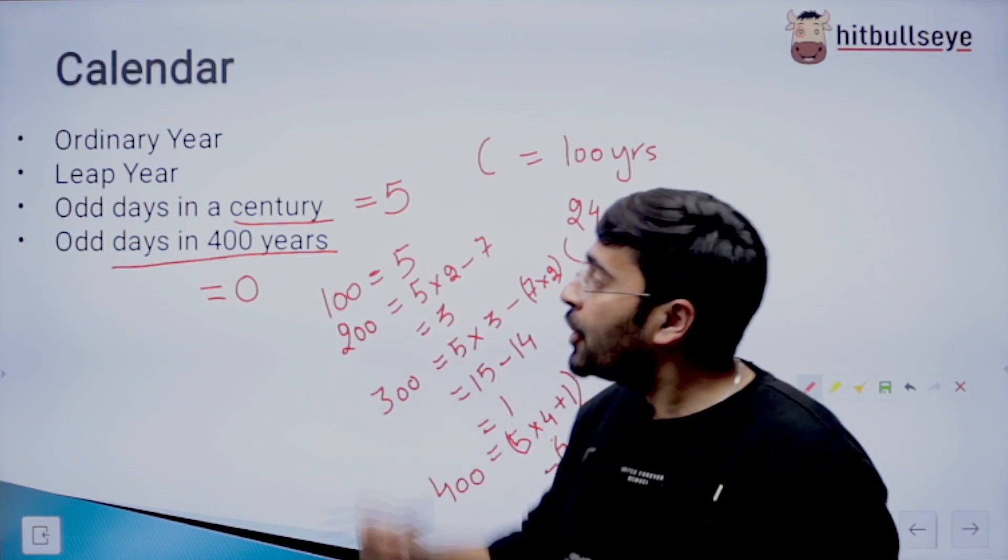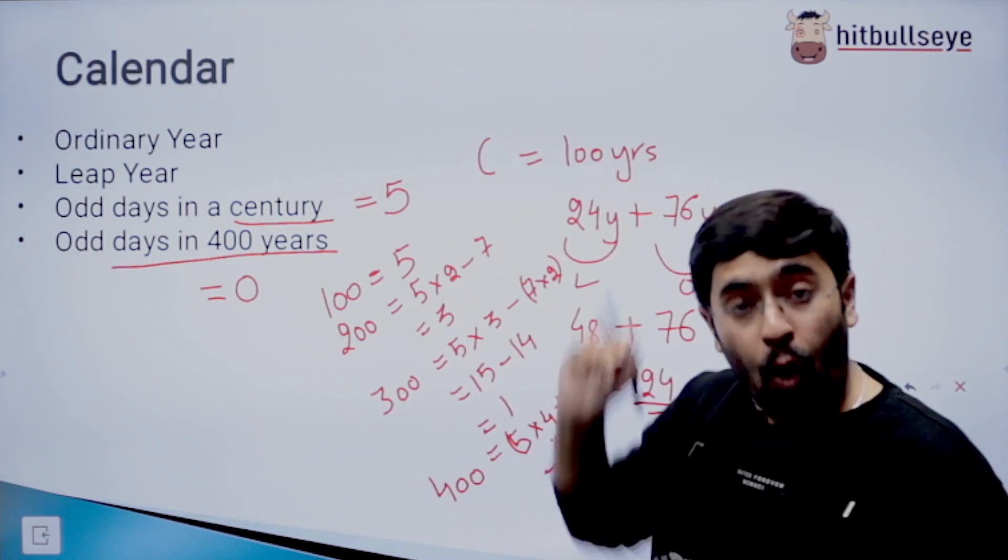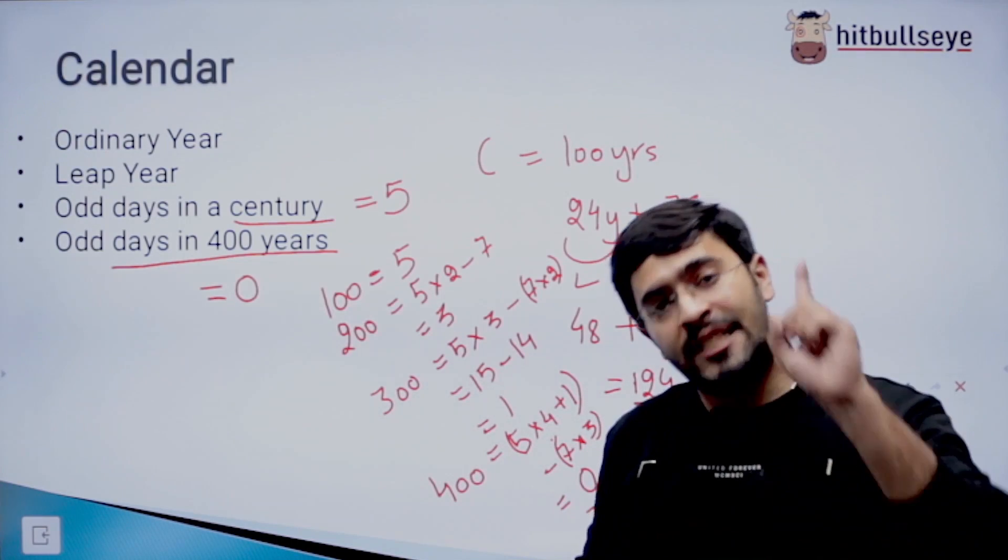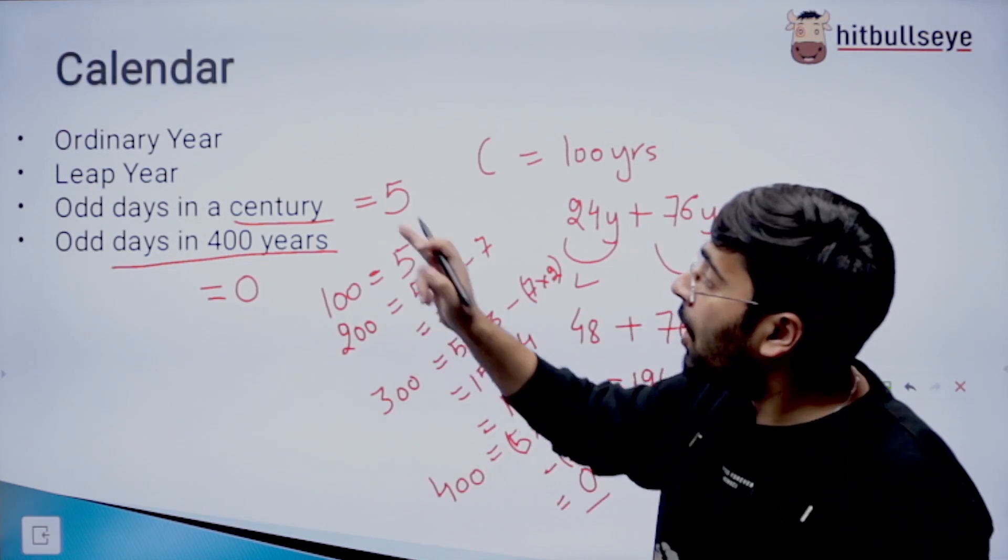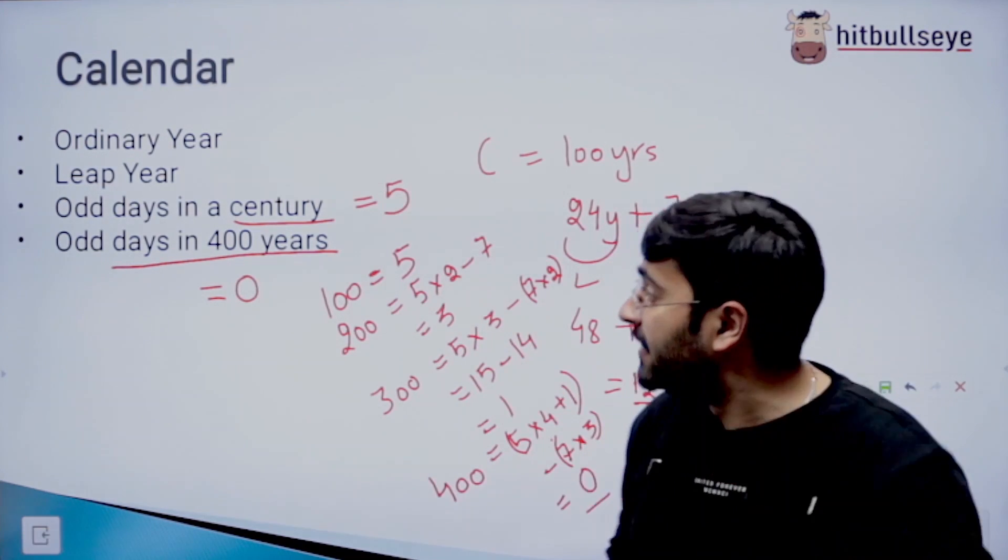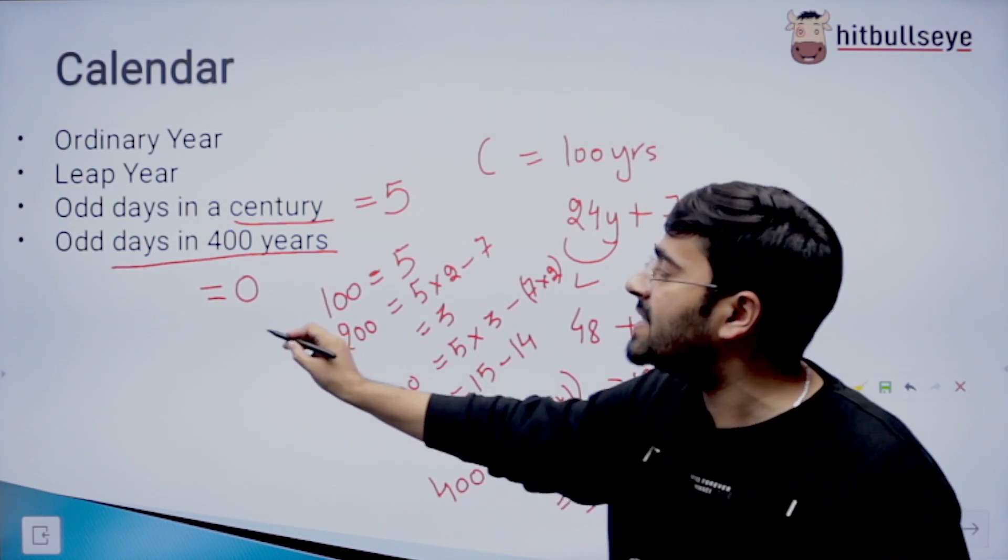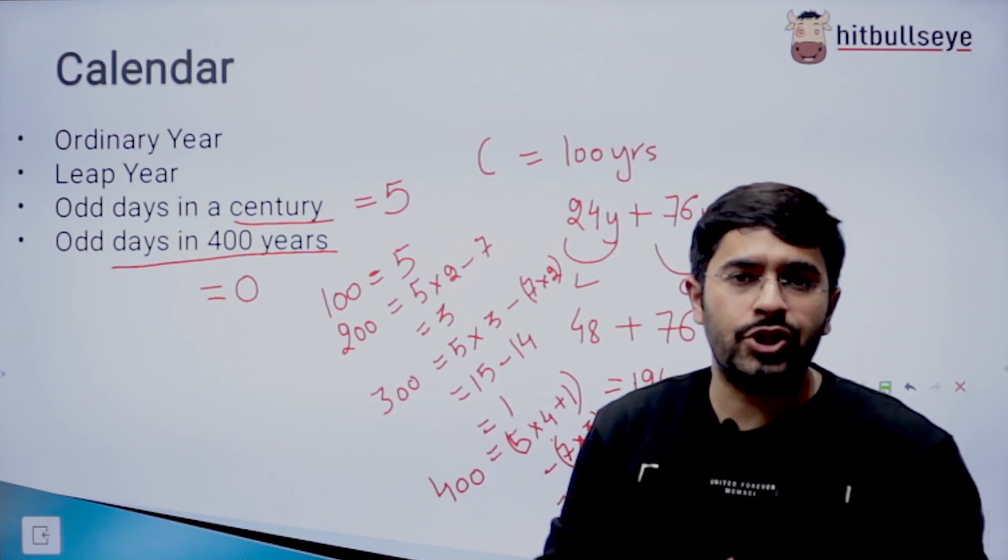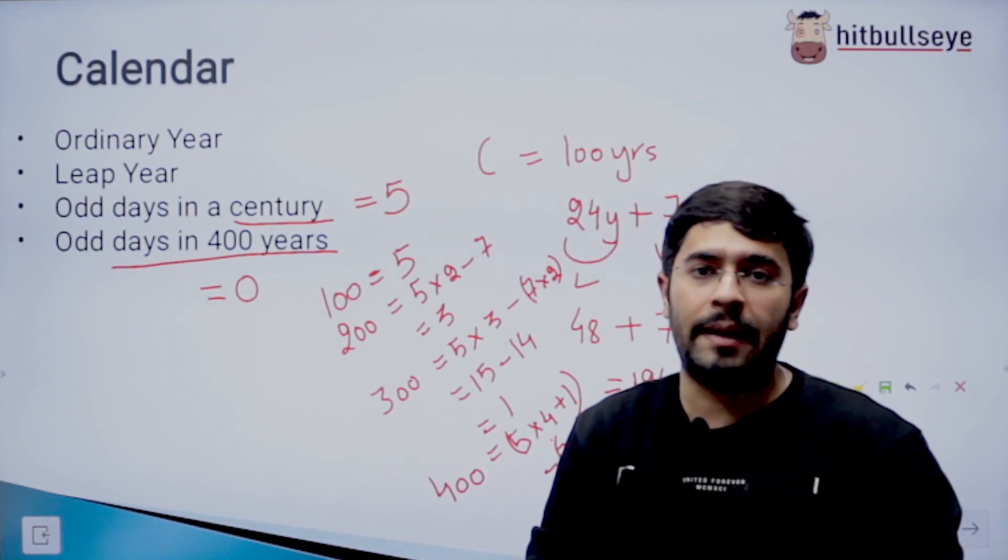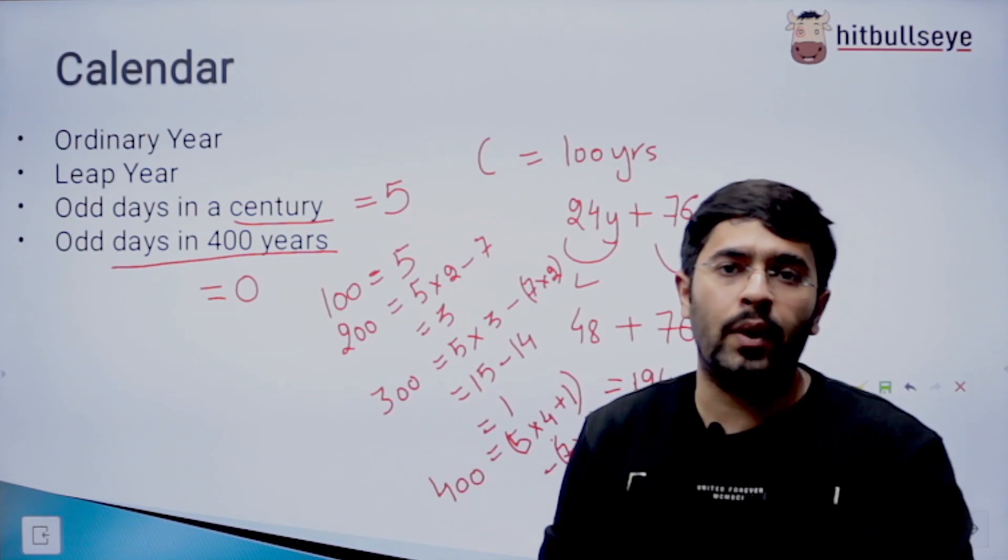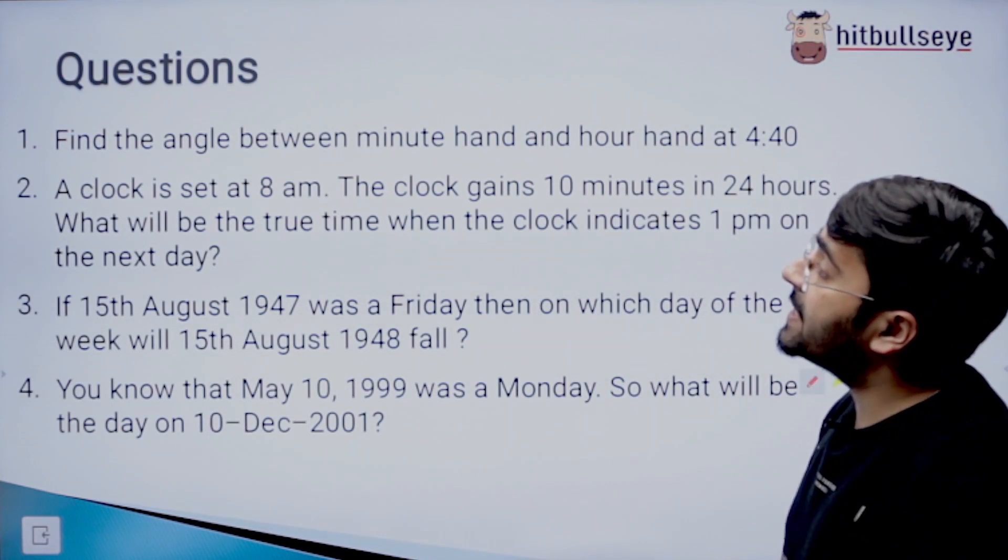So that is how you are going to remember: how many days are in an ordinary year? 52 weeks plus 1 day. In a leap year, 52 weeks plus 2 days. Odd days in a century are 5, and last but not the least, odd days in 400 years is 0. Now we move on to some questions. As I read the questions, you can try it. In case you are unable to attempt, I am also going to attempt them here.